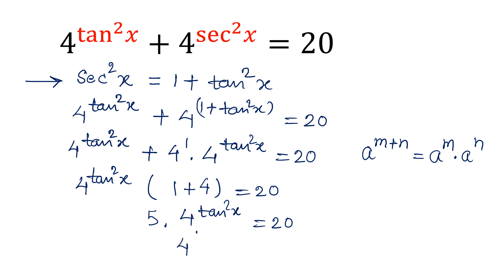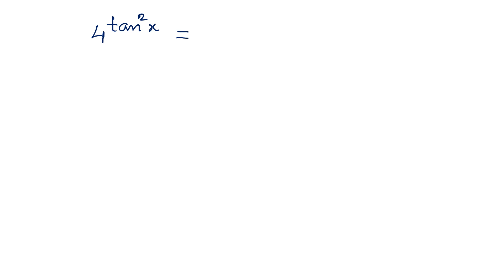That means 5 × 4^(tan²x) = 20, which gives 4^(tan²x) = 4, and 4 is equal to 4^1.